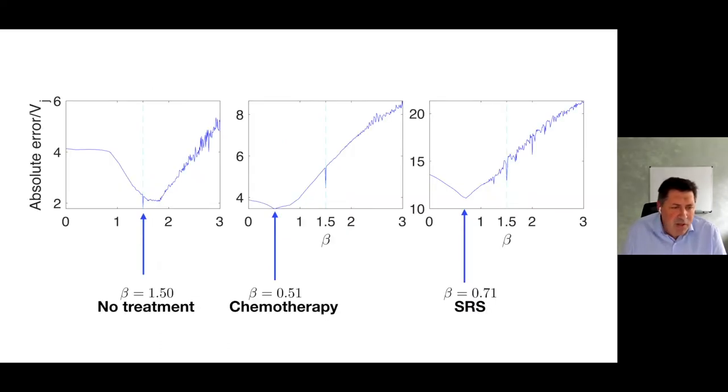What does this mean? This is another way of computing exponents less sensitive to individual errors, group fitting. We assume all metastases have the same exponent and fit the whole group of data. We get something similar. Without treatment, 1.5. With chemotherapy, 0.5. With radiosurgery, 0.7. Keep in mind these numbers are of the dynamics when the tumor is growing. First, growing without treatment, and this is growing after treatment. Even when beta is positive, meaning growth, it's substantially slower than exponential growth.